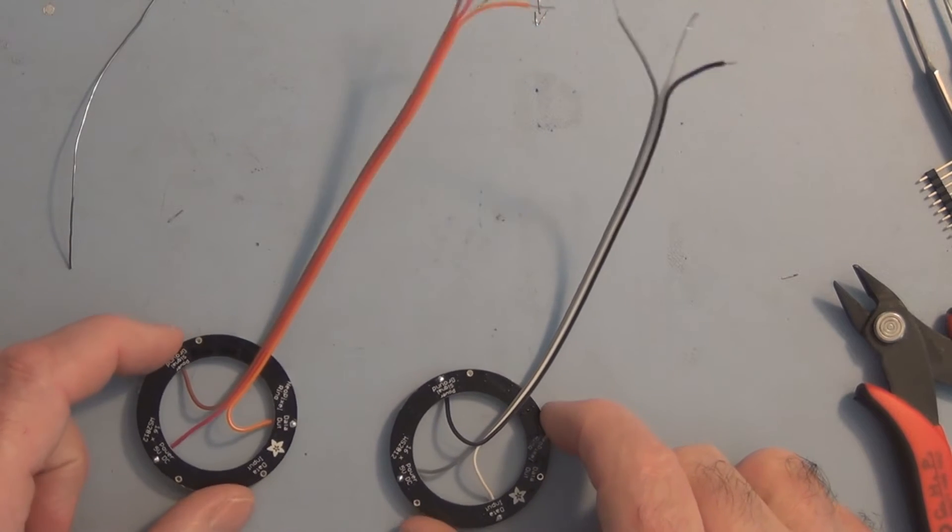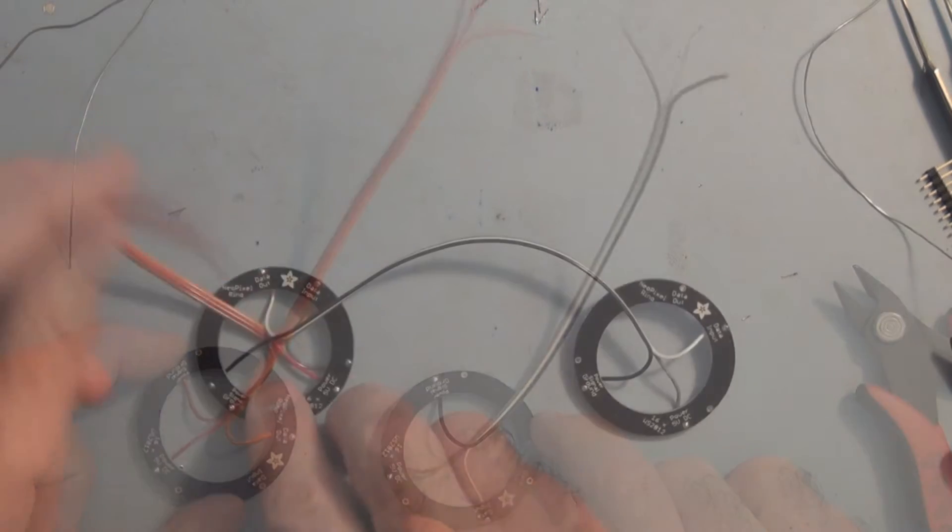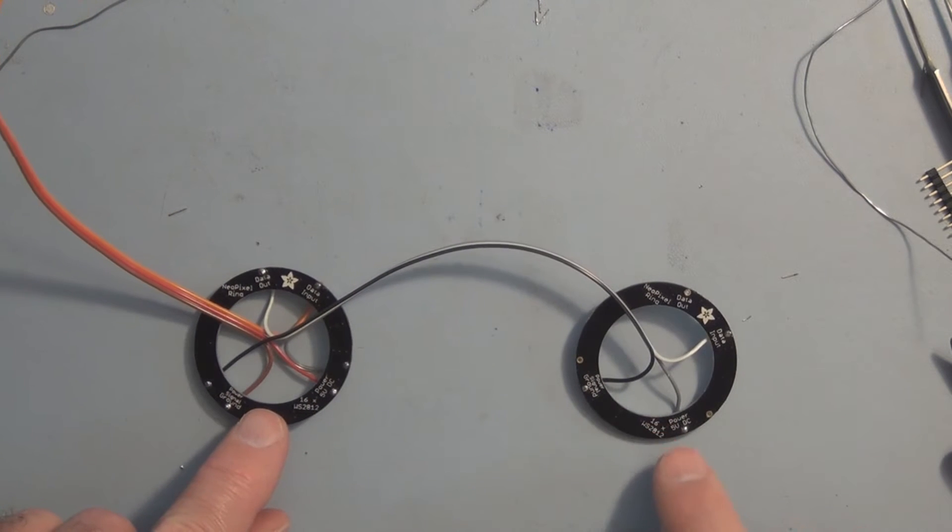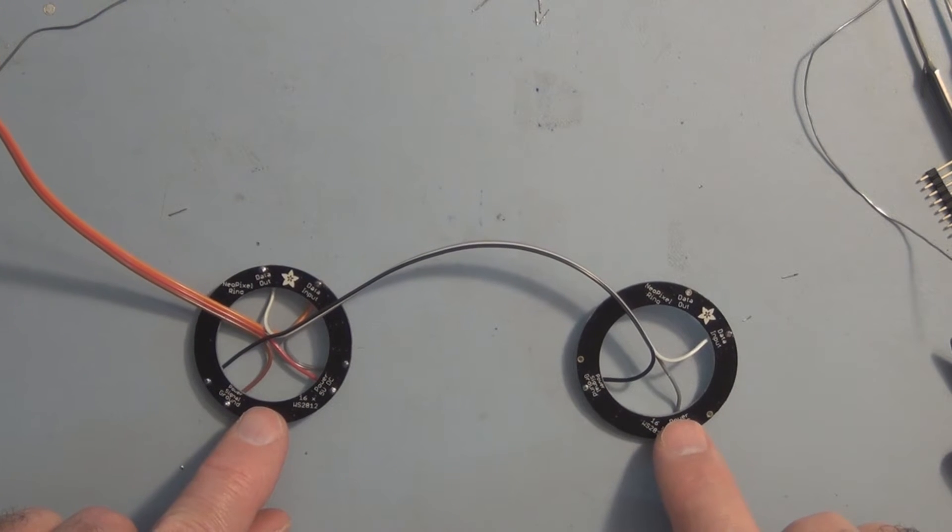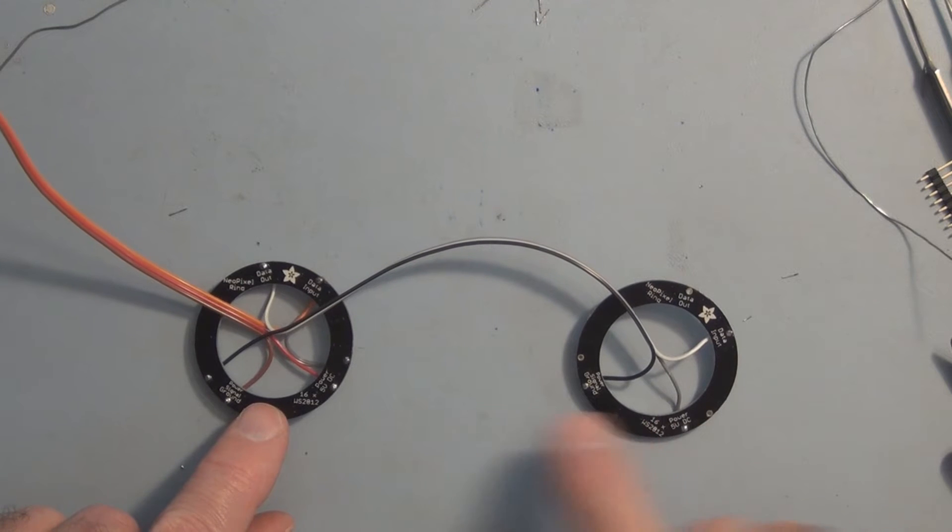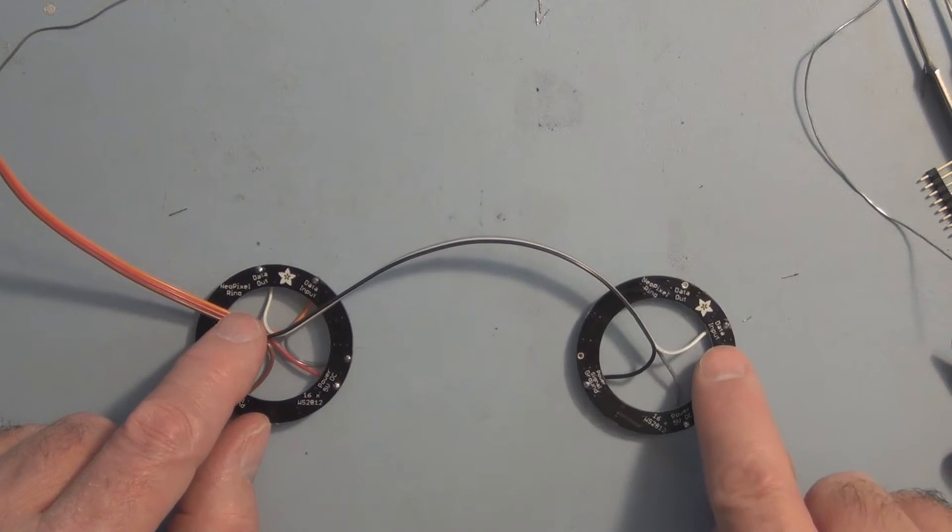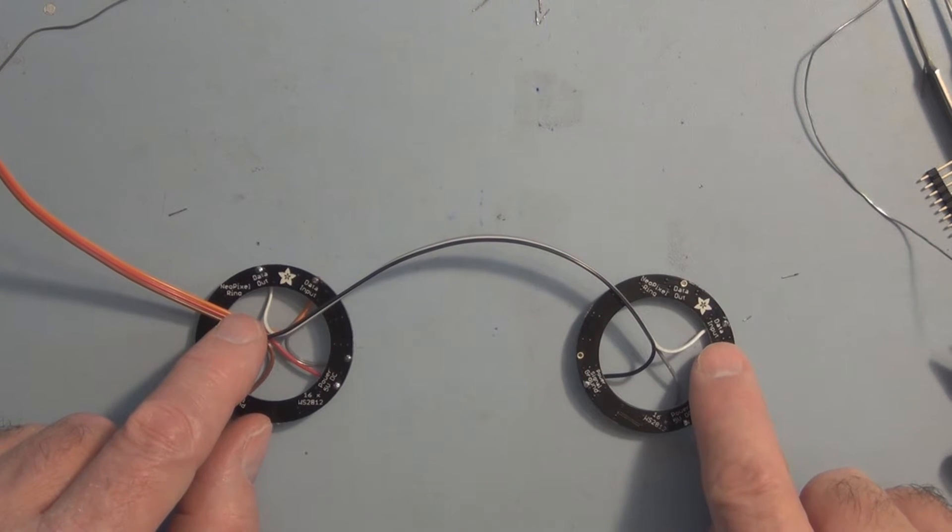I've got the wires attached to the Neo pixels. This wire here goes to the trinket and then you just tie the five volt lines and the ground lines together, and the data out from here goes to the data in on this Neo pixel.